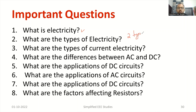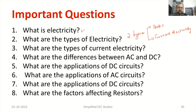The two types of electricity are: one is static electricity, and the other is current electricity. Then, what are the types of current electricity? There are two types of current electricity: number one, DC — direct current — and the other one is called alternating current, AC.